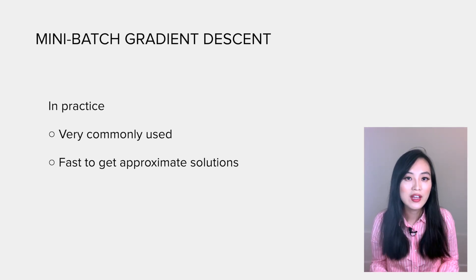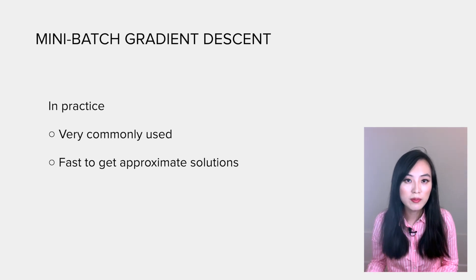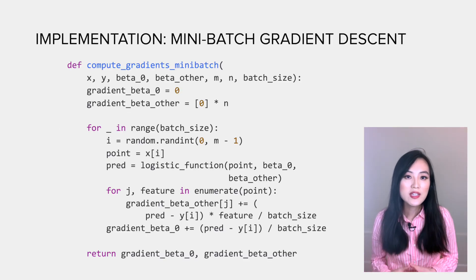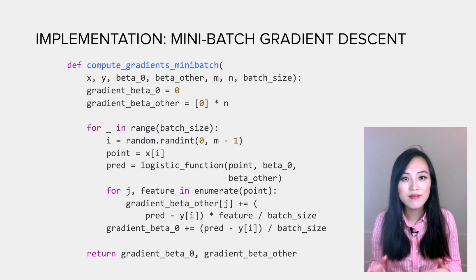So in practice, mini-batch gradient descent is very commonly used. It's more practical to have an approximate optimal solution that can be computed in a relatively short amount of time.